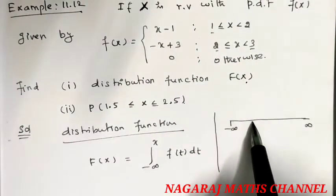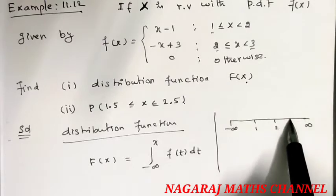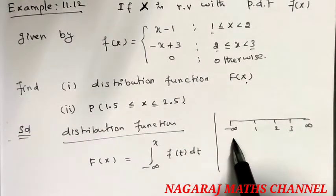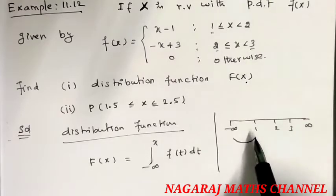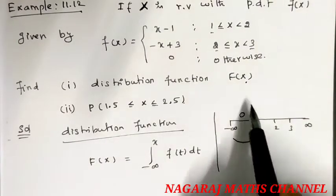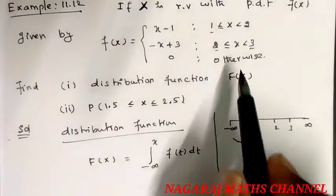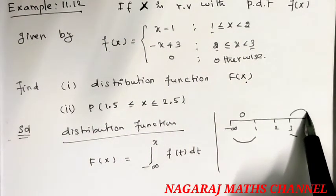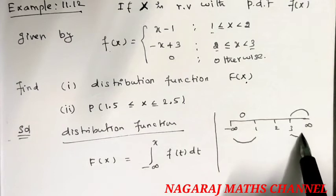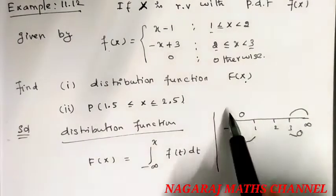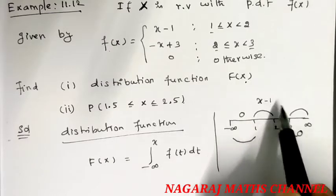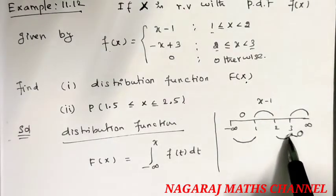So this is 1, this is 2, next is 3. In this case, if x goes to minus infinity up to 1, then F(x) is 0. If x goes from 3 to infinity, then F(x) is also 0. But if x is in the interval 1 to 2, then we use (x - 1), and if x is in 2 to 3, then we use (-x + 3).